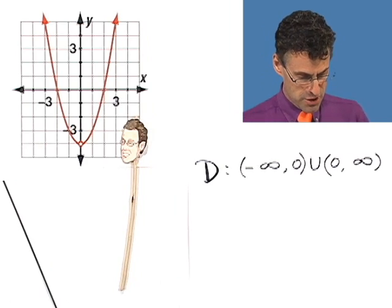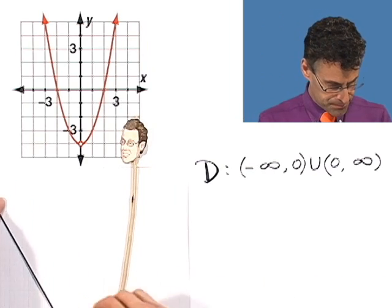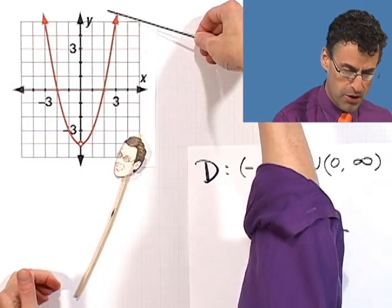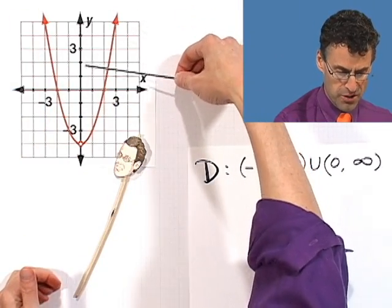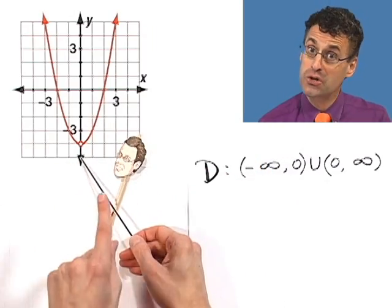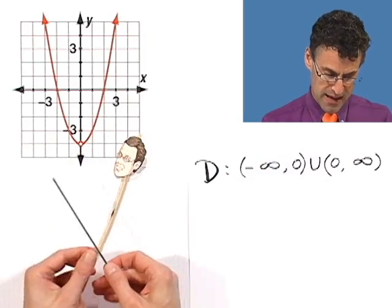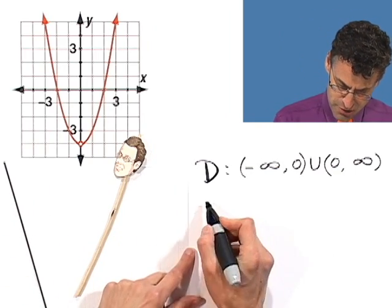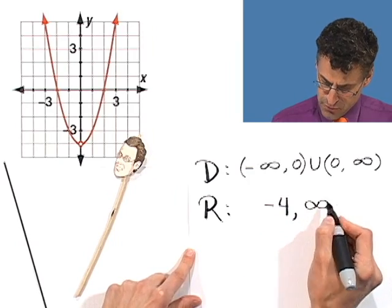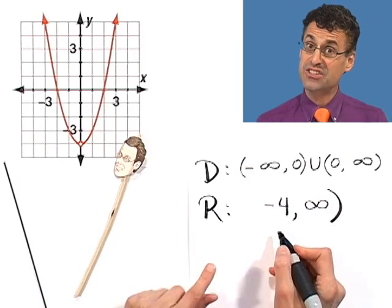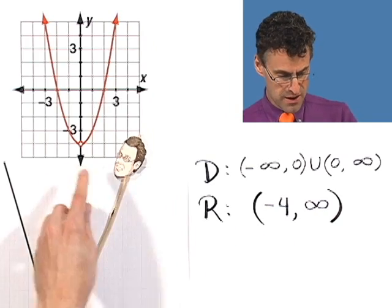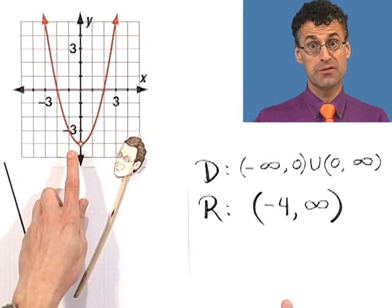What about the range? If you squash against the y-axis, you get all the values as high as you want, all the way down to negative four — but this time negative four is not included because there's a hole right there. So the range is from negative four to infinity, but we can't even touch negative four. We put an open parenthesis there: (-4, ∞).